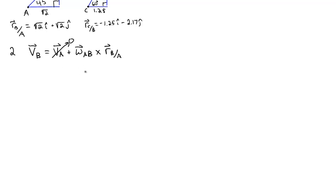And we've been given omega_AB, and we've just calculated R_B with respect to A in the first step. So we compute the cross product and find the velocity of B.